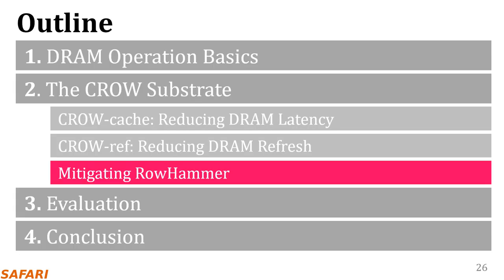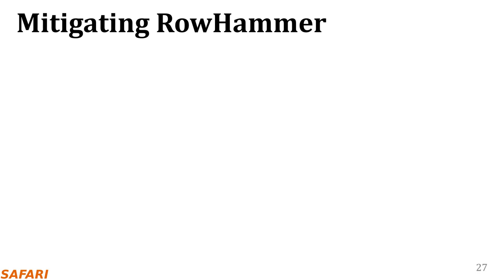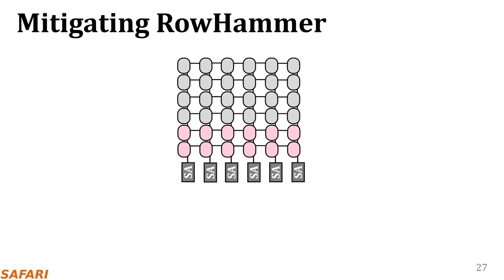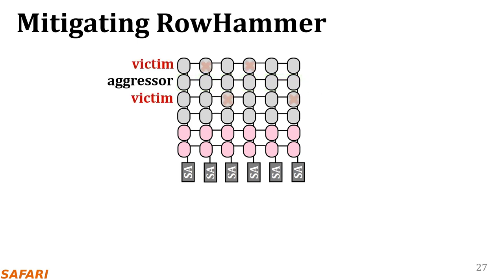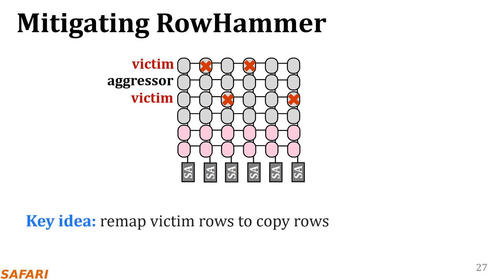In addition to CROW cache and CROW ref, in the paper we also briefly discuss a third mechanism that uses CROW to mitigate rowhammer errors. Rowhammer is a vulnerability caused mainly by process technology scaling. As DRAM cells become smaller and get closer to each other, they become more sensitive to electromagnetic interference. Rowhammer errors are induced by rapidly activating and precharging a row, which disturbs the cells in neighbor rows and has a chance to flip some of the bits stored there. Our key idea is to use the CROW substrate to remap the victim rows to copyrows, which protects the data in the victim rows as the rows get physically moved away from the aggressor row.